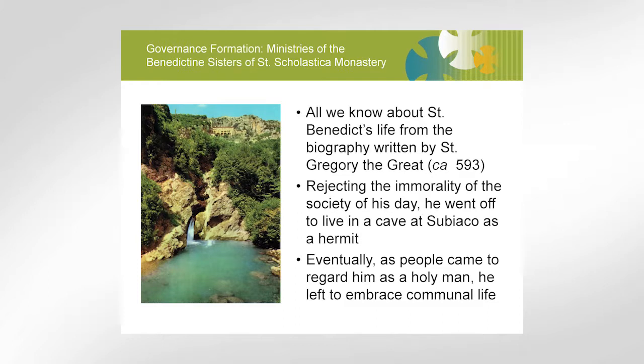There's not a lot that we know about Saint Benedict. All that we know comes from a book called The Dialogues of Gregory the Great, book two of The Dialogues. We know that when he was a young man, he was intended to go to school in Rome, but he was increasingly disgusted with some of the immorality that he saw, and so he decided to retreat and become a hermit in a cave at Subiaco. Eventually, people came to know that he was there and regarded him as a holy man, so they asked him to leave the cave, and he embraced communal life.